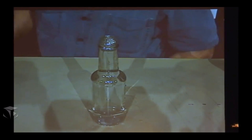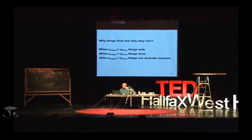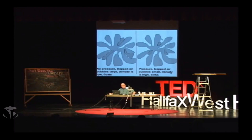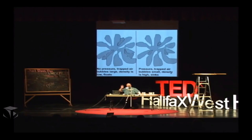What's happening here is when there's no pressure, the trapped air pockets in the aluminum foil are big, and the density is low, so the thing floats. But when you press on the top of the bottle, you increase the pressure greatly and compress the air pockets by the ideal gas law, and then the density becomes high and it sinks. Just with your finger, you can control this thing and make it go up and down. It's a wonderful way to make money — you can bet your friends and make this thing go up and down.